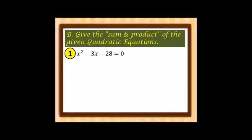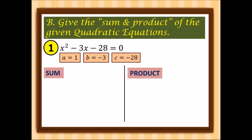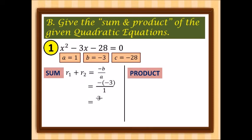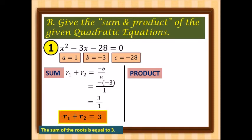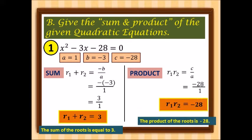First example: a is 1, b is negative 3, and c is negative 28. For the sum, using negative b over a: negative times negative 3 over 1 gives us 3 over 1, so r sub 1 plus r sub 2 equals 3. For the product, using c over a: negative 28 over 1 gives us negative 28. Therefore, the product of the roots is negative 28.